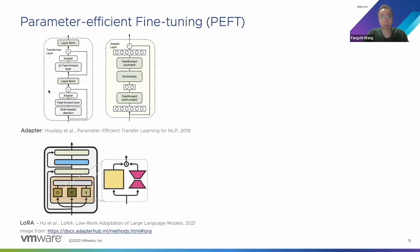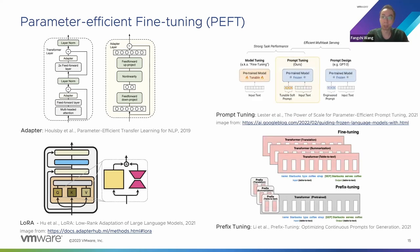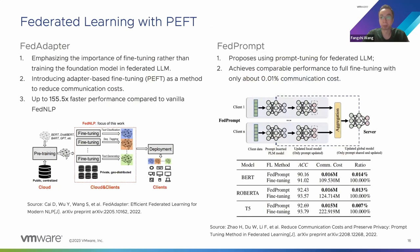Here are some typical PEFT approaches, such as the adapter mechanism. There is also LoRA, a popular PEFT method that uses low-rank matrices to represent updates to certain weight matrices in the self-attention module. There are other methods like prompt tuning and prefix tuning, which involve inserting trainable prefixes at the model's input layer or each transformer layer. During fine-tuning, only these prefix parts are trained and updated.